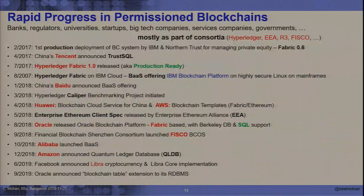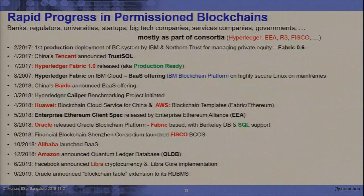There are many production deployments in spite of the short time available and the evolving features. Fundamental architectural changes have been introduced — when Fabric went from version 0.6 to 1.2, it introduced the notion of endorsing peers and non-endorsing peers, and allowed subsets of the network to form their own channel concept, like a Venn diagram — enabling a single network to be further segmented so that only certain parties see certain transactions.